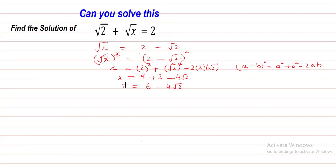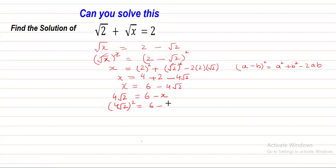So X equals 6 minus 4 square root 2. We shift 4 square root 2 from the left to the right side, giving us 4 square root 2 equal to 6 minus X. In the next step, we take the square on both sides: 4 square root 2 whole square and 6 minus X whole square. We can write 4 square root 2 whole square as 4 square root 2 times 4 square root 2.